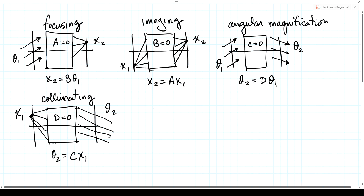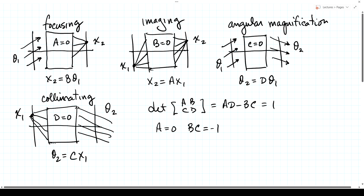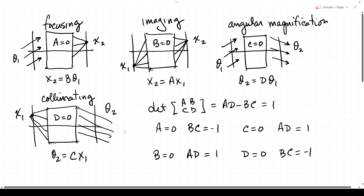In all cases, because the determinant AD minus BC equals 1: if A equals zero, then BC equals minus 1, so C equals minus 1 over B. If B equals zero, then AD equals 1, so D equals 1 over A. If C equals zero, again AD equals 1. If D equals zero, then BC equals minus 1. So just from this determinant relationship, knowing one parameter is zero tells us a lot about the system from this top-level analysis.